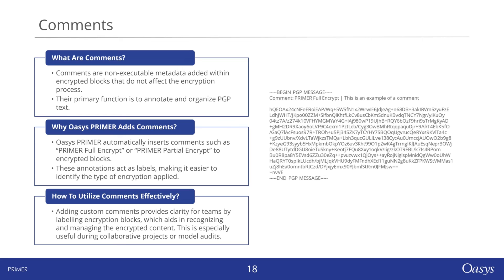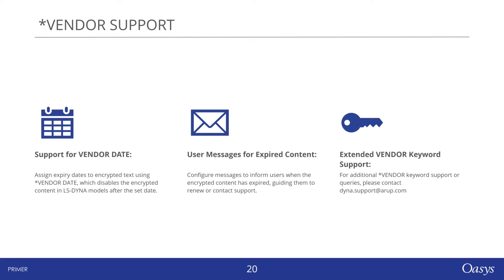How do you license your models? To license your models, it's necessary to use the vendor keyword within the encryption tool. The encryption tool supports the specification of vendor date, allowing you to assign an expiry date to your encryption blocks. Additionally, you have the option to configure unique messages that will display once your encryption blocks expire, further customizing the licensing process. To set up these vendor options, navigate to the vendor options section where you can specify expiry dates and other relevant details. For further assistance with vendor configurations, please reach out to DynaSupport.